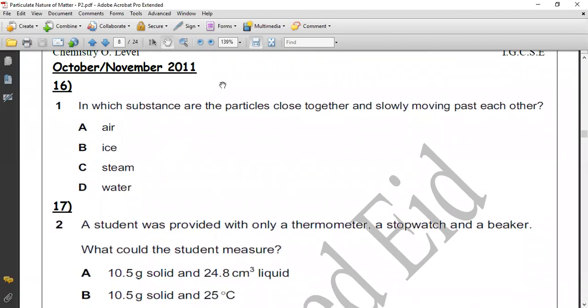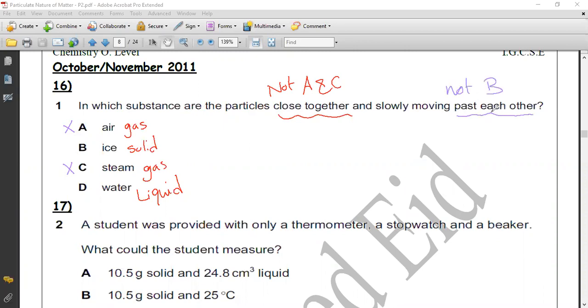Question 16. In which substance are particles close together? Air is considered as gas. Ice: solid. Steam: gas. Water: liquid. Solid. So in which substance are particles close together? Close together, so not A and C. A: not close together. C: not close together. And this will be moving past each other. Past each other means not B. D: ice is solid, they are not moving past each other, they vibrate in its place. So the correct answer will be water.